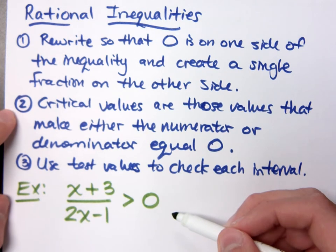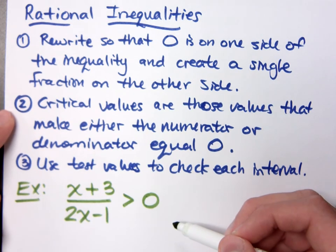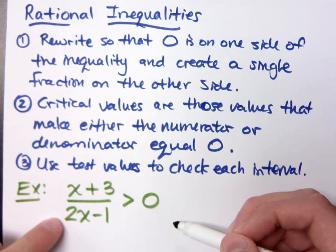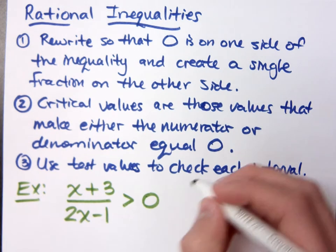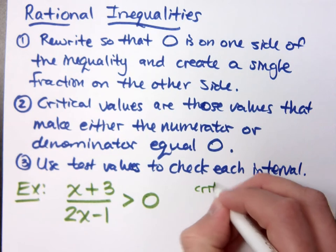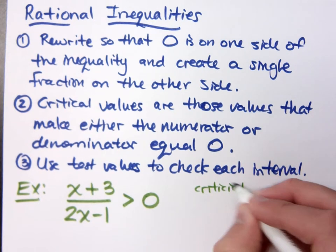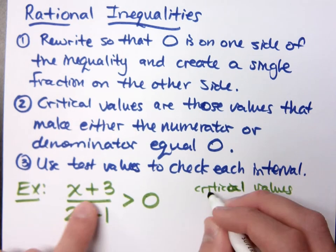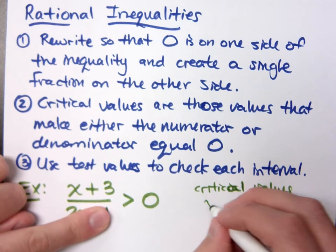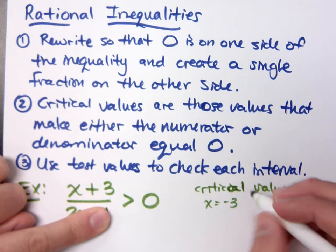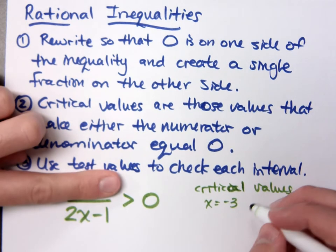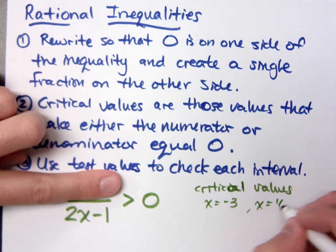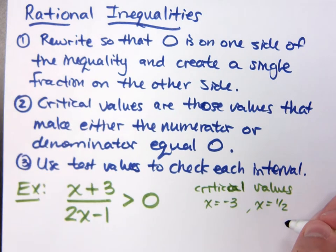I want to find those critical values — the values that make the numerator or denominator equal to zero. Looking at the numerator, x equals negative 3 is a critical value. For the denominator, x equals one half. Those two critical values are how I separate my number line and create my intervals.